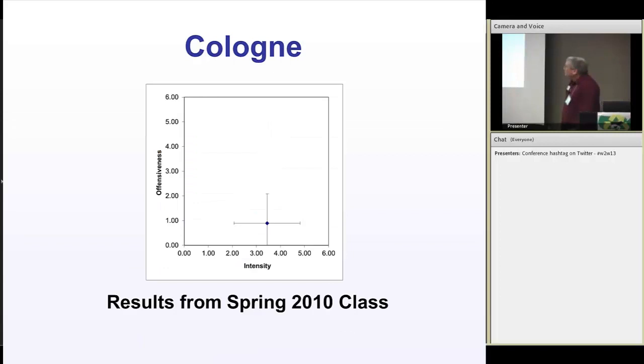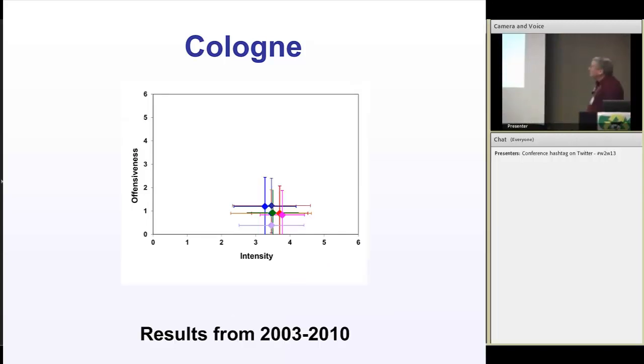The other thing we do in this particular exercise is we take the average of the intensity and the offensiveness, and then we plot the standard deviation so it's a nice star. And here in the cologne, the average intensity was three and a half. This is one class. And of course, standard deviation goes below zero, but hey, that's math. And this is the results of seven different years of doing it all. It's just like a good marksman hits that same spot. And I'm just randomly doing the cologne. So there's a lot of error in here.